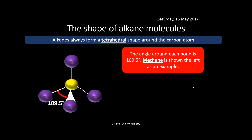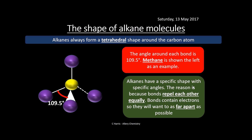Now the shape of alkane molecules: alkanes always form a tetrahedral shape, which you'll remember from the bonding topic about shape. This is around the carbon atom. The angle around each bond is 109.5°. This is an example of methane. Alkanes have this specific shape because all the bonds repel each other equally — they want to be as far away from each other as possible because they're all made of electrons. So they get a very defined shape and a very defined bond angle of 109.5°. They're all tetrahedral.